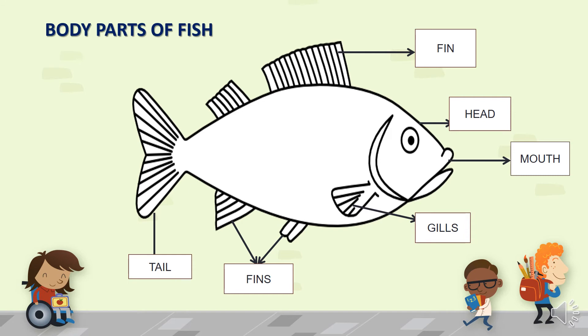Gills are used to breathe, like we breathe. Head. Mouth is used to eat something tiny. Fin is used to swim. And the tail is also used to swim.